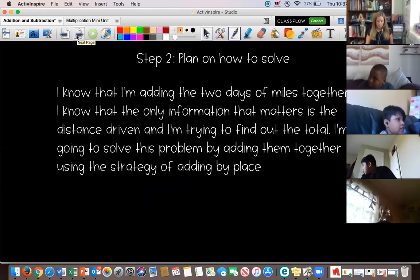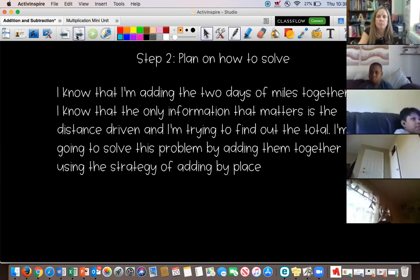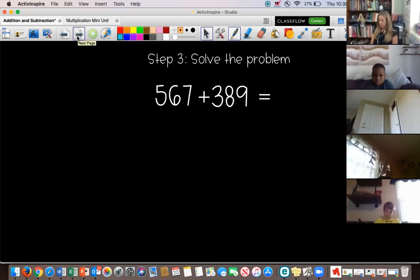So, I figured out what's important, what I need to figure out, and what I need to ignore. Right? I've done all those three things. So, I can move on to step two. Step two is planning on how to solve it. So, now, I know that I'm adding the two days and miles together, and I know that the only information that matters is the distance that was driven. I'm going to try to figure out the total distance driven. I'm ignoring those 98 degrees and all that. I'm just adding the two distances. So, I'm going to solve it. My plan is I'm going to solve it using the strategy of adding by place. So, now, I know what I'm doing. I've got a plan.